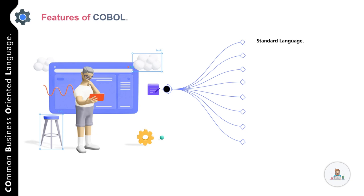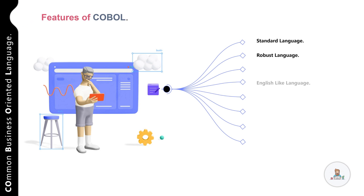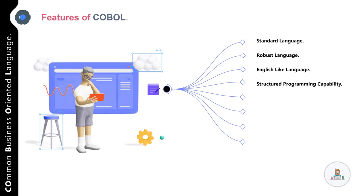The second feature is that COBOL is a robust language. There are a number of testing and debugging tools available for COBOL programs on almost all kinds of computing platforms, developed by third-party vendors based on ANSI directives. Third, COBOL is an English-like language and is very user friendly. All instructions are coded using English words rather than complex code — for instance, if you want to read a record from a file, you use the verb READ.